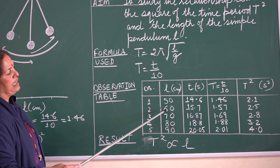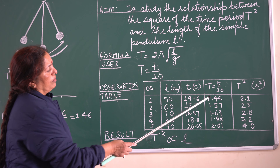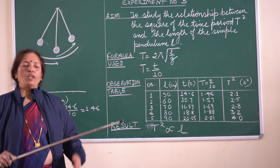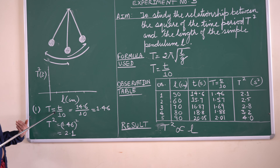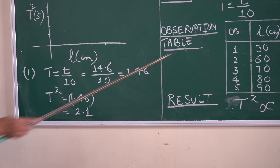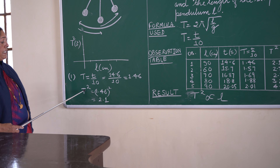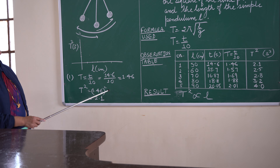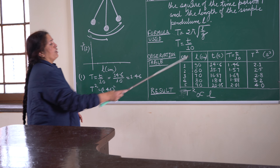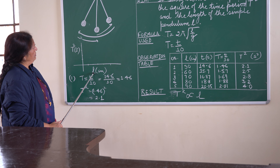I will repeat the experiment by changing the length of the pendulum to 60 cm, again find the time for 10 oscillations, take the time period, find the square of it, and so on. That means I have to take 5 sets of readings for different lengths. Once I have all the observations, I will do the calculations. Then I have to plot a graph between the length of the pendulum and the square of the time period.